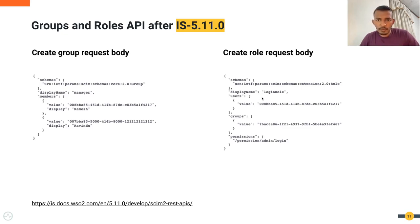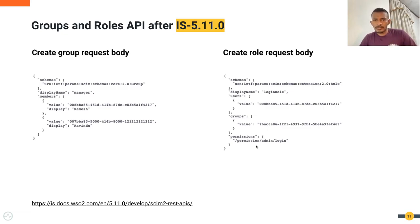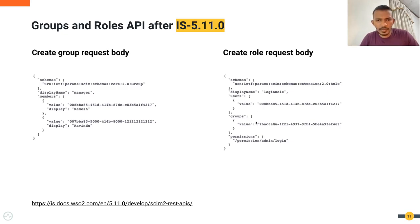This is the body of a sample POST request for the roles endpoint to create a role called 'login role'. Here you can define a list of users and a list of groups to assign them this role, and you can define a set of permissions for this role. Display name is a required string-type attribute; other attributes are not required. The users attribute and the groups attribute are multi-valued complex attributes, and the permissions attribute is a multi-valued attribute that accepts reference type values — meaning a string that points to a resource in the server.